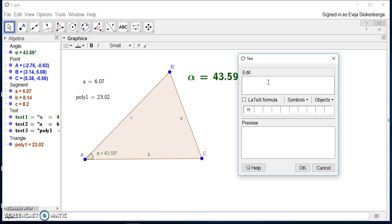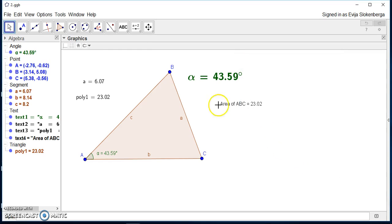For example, now I will write that I want to see the area of triangle ABC. And now I want to insert an object that will show the area. And for me it's poly1. And here we can see in the preview that it will show the number. I push OK and so now whenever I change the vertices you see that the area also changes.